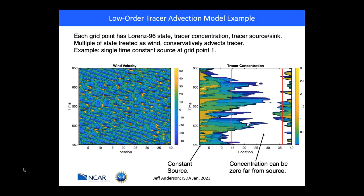I want to quickly show some examples using a model of tracer advection. The wind field is the standard Lorenz 96 state, shown on the left, and it is used to advect a single tracer with a single constant source at grid point one. Since the Lorenz 96 state variables are more often positive than negative, tracer is mostly blown off to the right in this time series. Occasionally the wind reverses and some tracer gets blown back. I'll look at concentration at the red vertical line locations — one getting advection from the left, one mostly from the right — both tending to go to zero concentration intermittently.